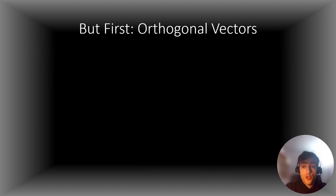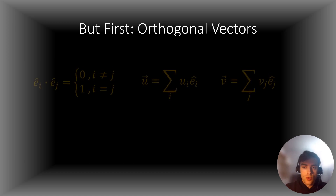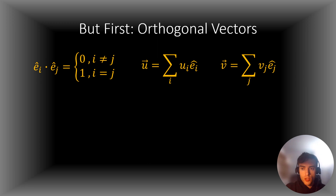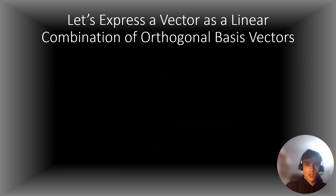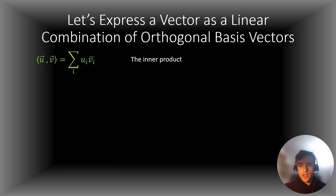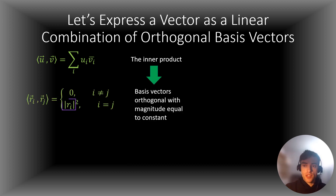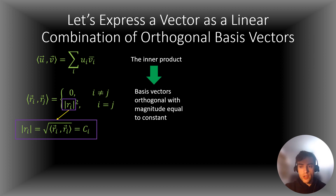But first, let's review what it means for two vectors to be orthogonal or perpendicular. It means that if we have two vectors u and v, which are composed of a linear combination of orthogonal basis vectors, then the inner product — also known as the dot product — must be equal to zero. So if we want to express a vector as a linear combination of orthogonal basis vectors, we first need to define the inner product. Next, we need a set of orthogonal basis vectors in which the inner product between different vectors in the set is zero, whereas the inner product of one of the vectors with itself is the square of the magnitude of the vector.